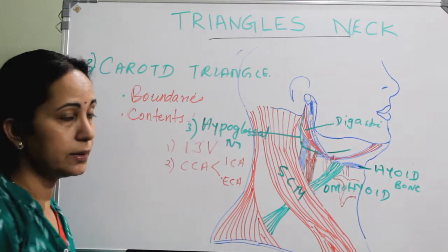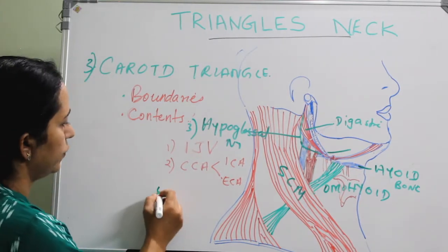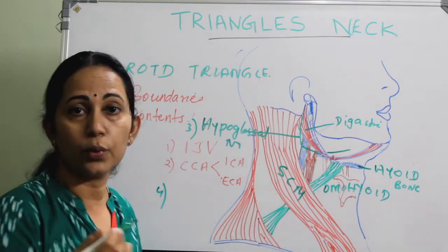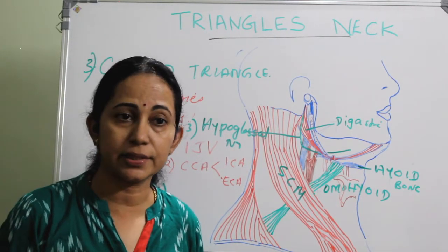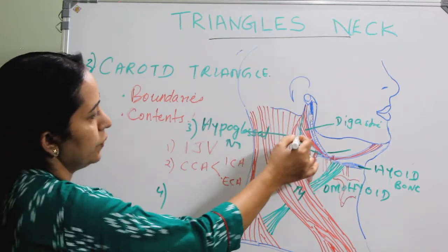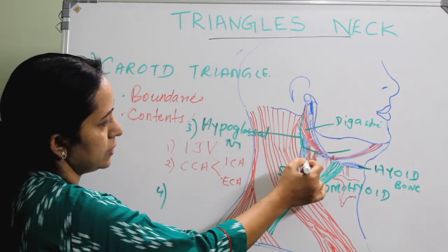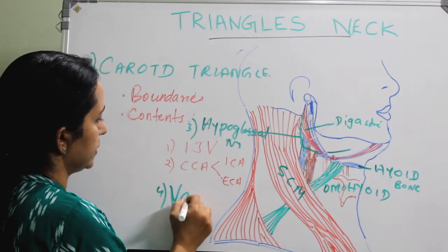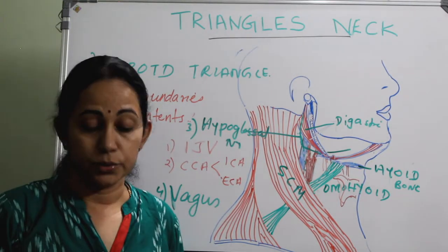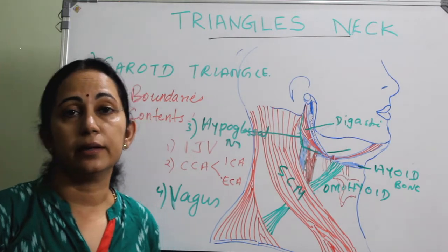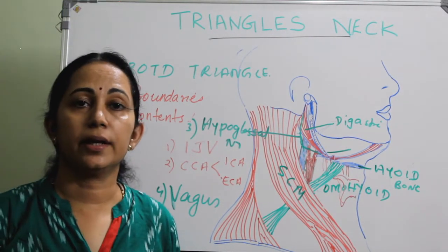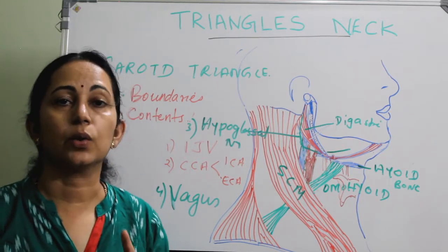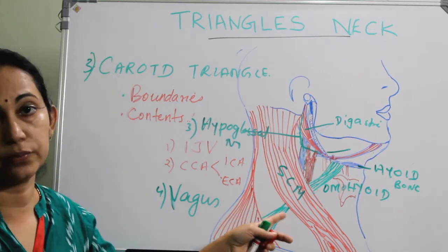The hypoglossal nerve forms the third content. The fourth one is the vagus nerve, which runs along with the carotid sheath between the internal jugular vein and the carotid artery. So the contents of the carotid triangle are: internal jugular vein, common carotid artery dividing into external and internal carotid artery, the hypoglossal nerve, and the vagus nerve.